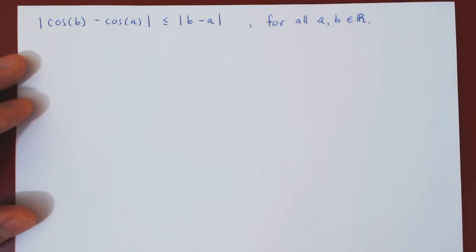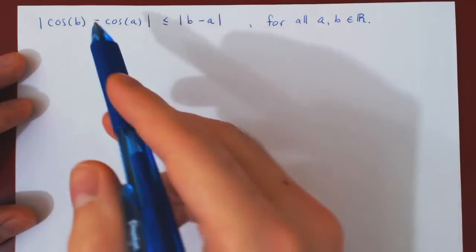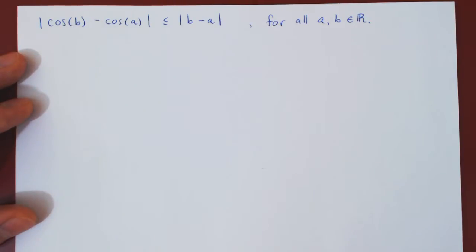We want to use the mean value theorem. The function clearly is cos(x), and the interval clearly is just from a to b. As cos(x) is continuous and differentiable everywhere, the mean value theorem does apply.